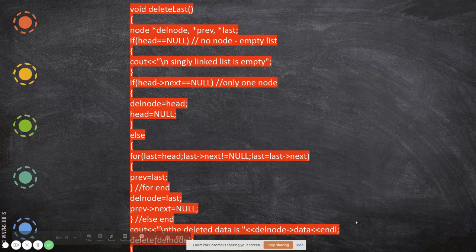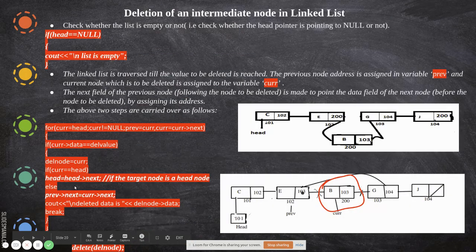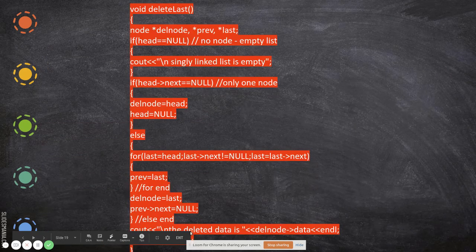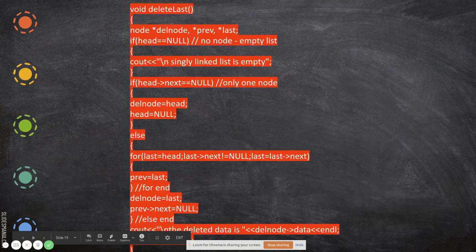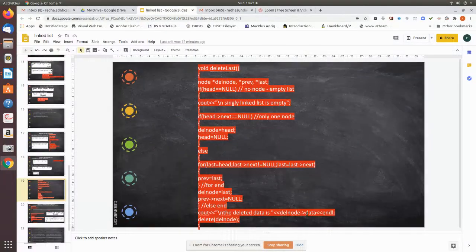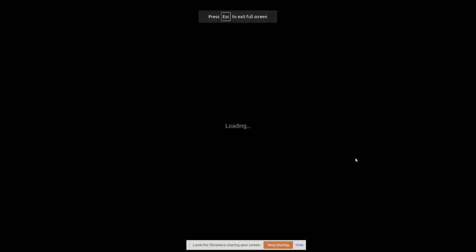Finally, we print the data being deleted, then call free(del_node) to release the memory. After executing that statement, the node is deleted. That completes the deletion of the last node.